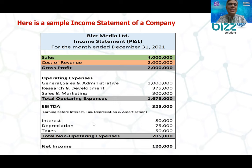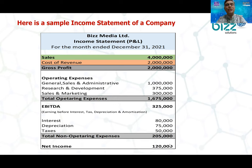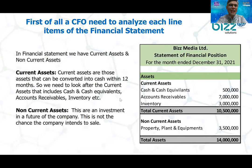Below EBITDA, we have interest — bank interest and other interest — then depreciation, income tax, and finally net profit. Net profit is used as the basis for EPS (earnings per share) calculation. From there, we move into the analysis of current assets.